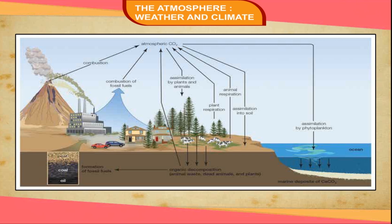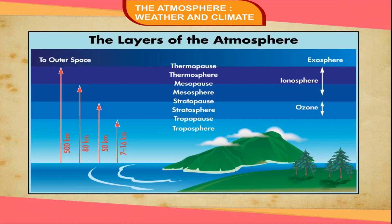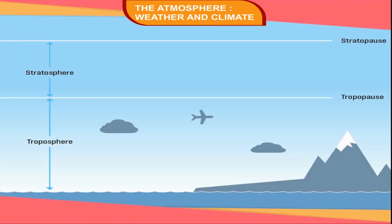However, human activities are disturbing this balance by polluting the air. Structure of the Atmosphere: The atmosphere can be divided into five distinct layers — Troposphere, Stratosphere, Mesosphere, Ionosphere, and Exosphere.